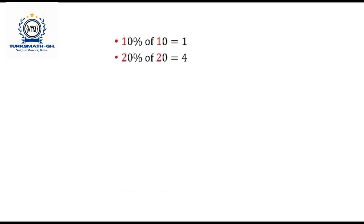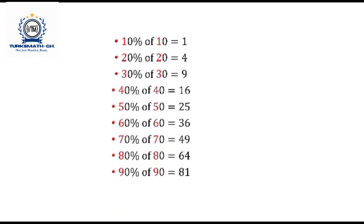20% of 20, same 2 times 2, that gives you 4. So what will 30% of 30 be? Obviously, that's 9 and it follows.